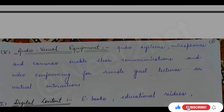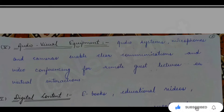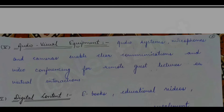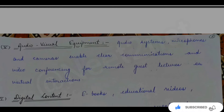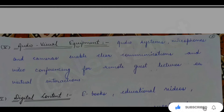Another element is audio and visual equipment. Smart classrooms use a multi-sensory approach, so we need audio and visual equipment. For the audio system we need speakers and microphones, and for visual equipment we need cameras, so we can do clear communication or video conferencing. If we need a guest lecture or video conferencing, we need a mic and camera too. This is also one of the important components of your smart classroom.